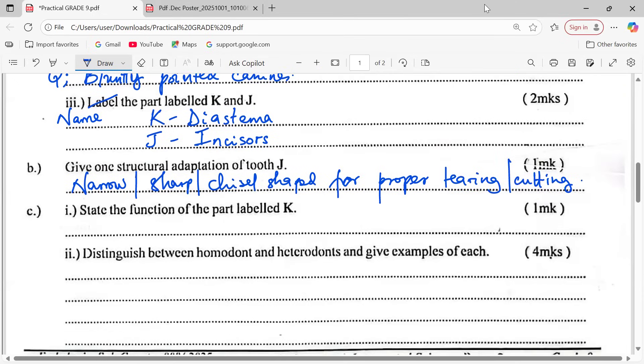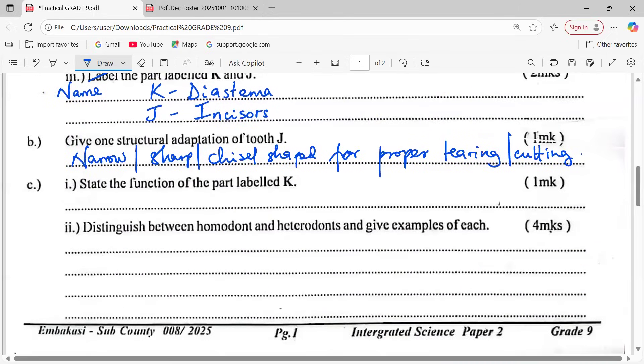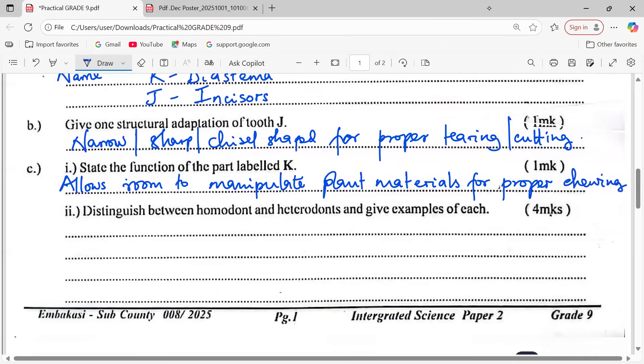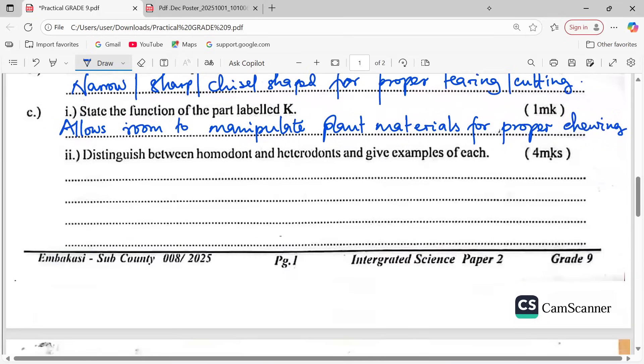State the function of the part labeled K. So functions of the diastema - the gap which is existing between the teeth there - we see that the diastema allows room to manipulate plant materials for proper chewing. Proper chewing is required so that the food materials which are plant materials, plant tissues, are broken down for easy digestion, for effective digestion. Remember the plant materials are taken by these particular animals when raw. Therefore for digestion, proper chewing is required.